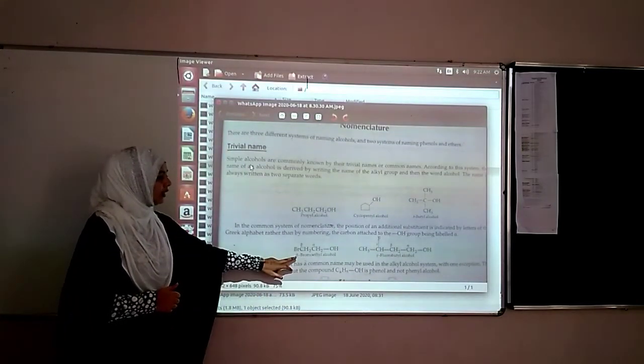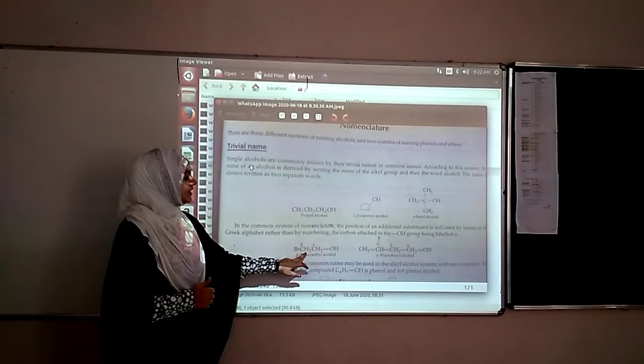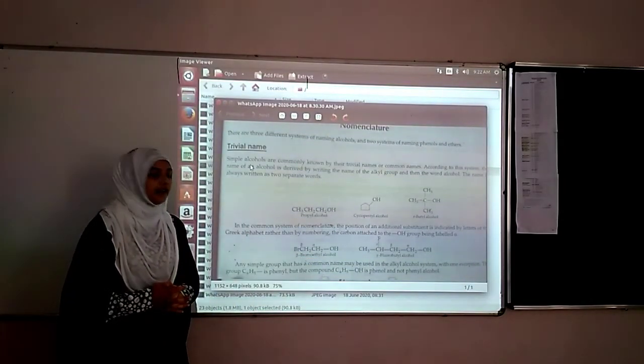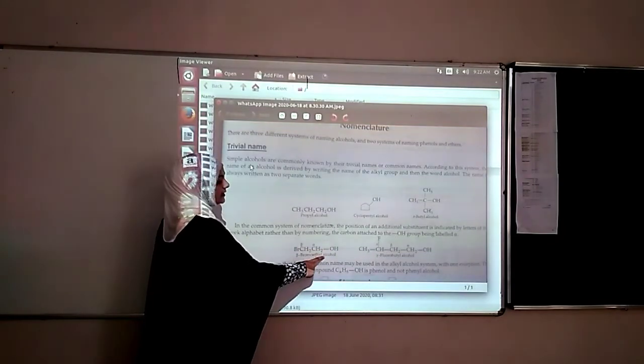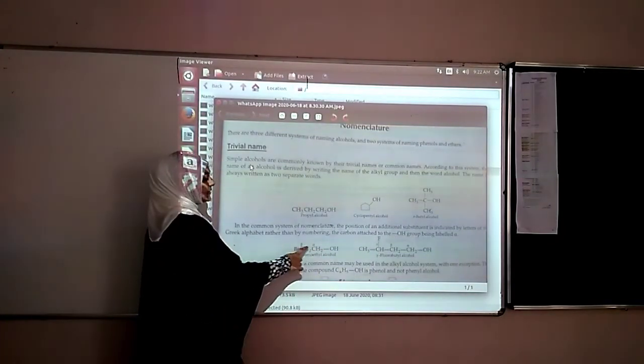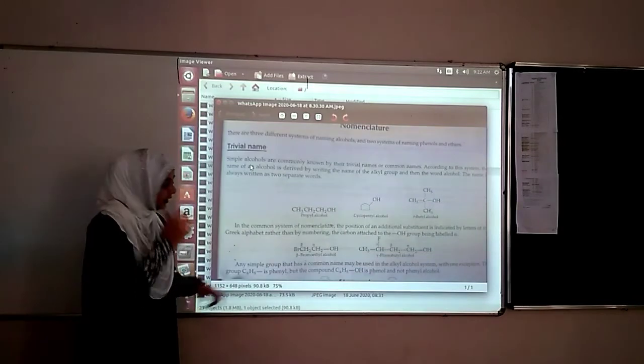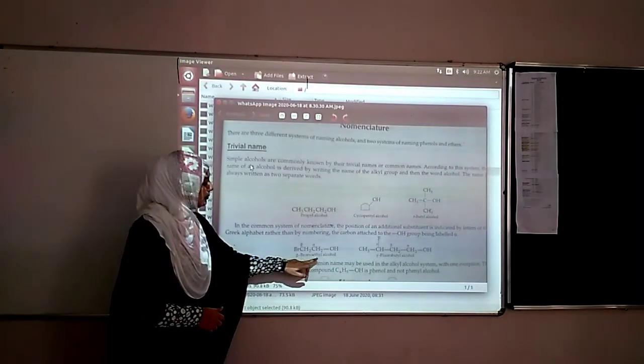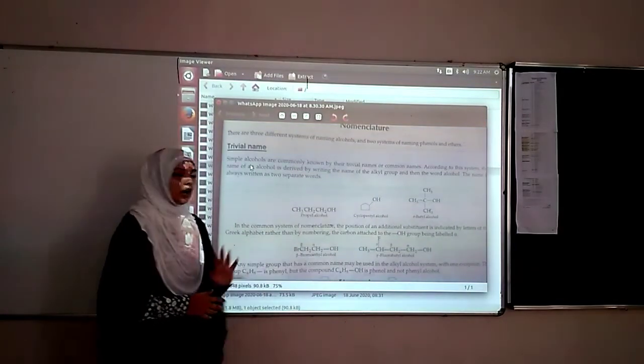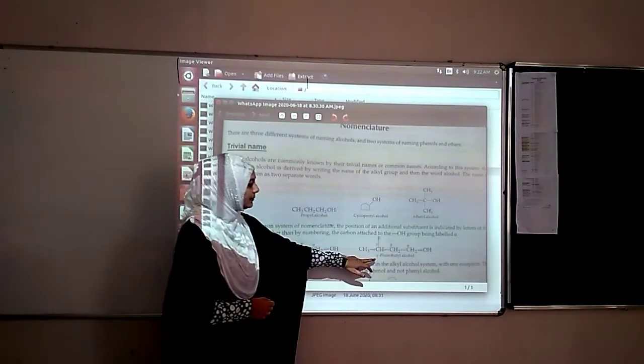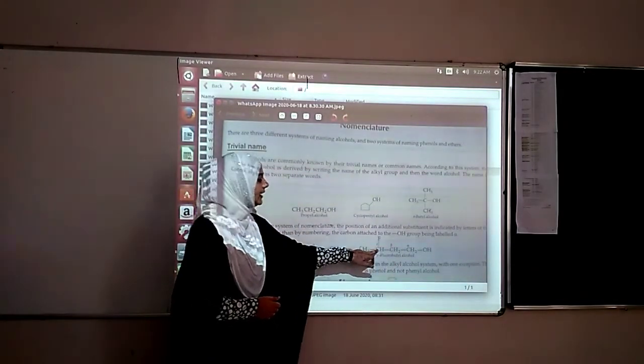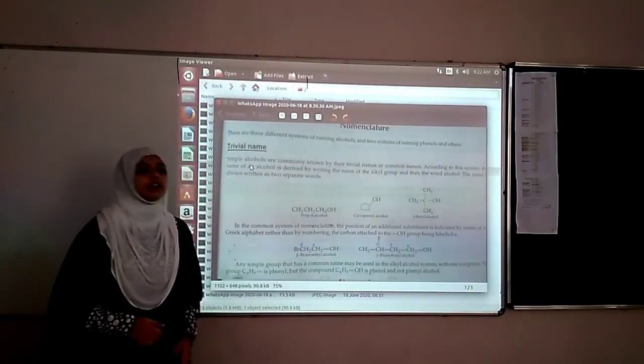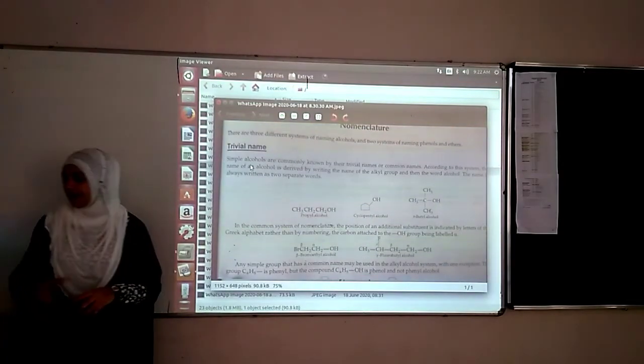We also have beta-bromoethyl alcohol. This carbon is alpha and this is beta, so beta has bromine. We call it beta-bromoethyl alcohol. Similarly, you have alpha, beta, gamma. Gamma-fluorobutyl alcohol. This is how we can go for naming them.